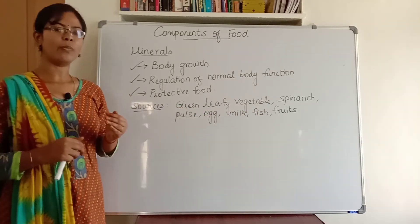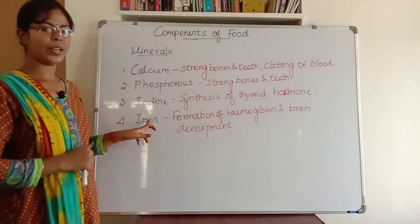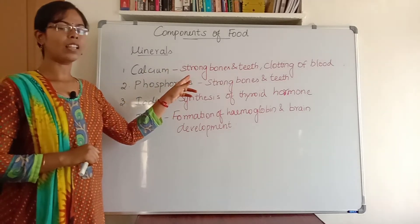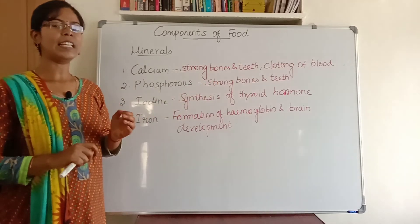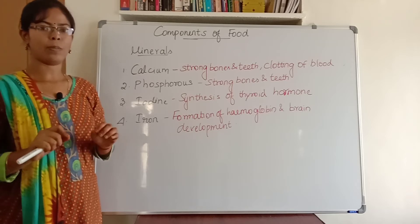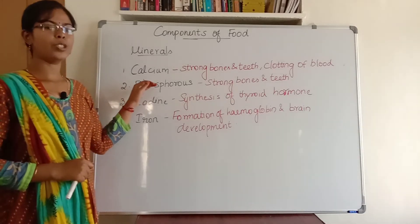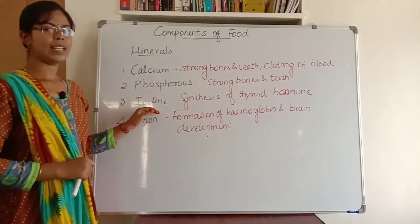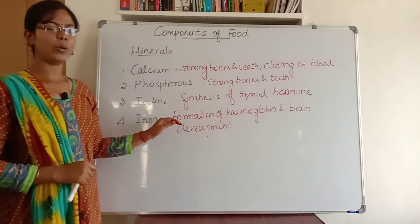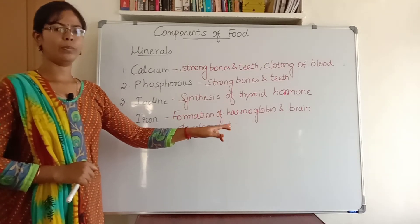Let us see about the various forms of minerals and their functions. The various forms of minerals are calcium, phosphorus, iodine, and iron. Calcium is necessary for strong bones and teeth and also for clotting of blood — so that even a small cut will stop bleeding at some point. Phosphorus is required for strong bones and teeth. Iodine is necessary for the synthesis of thyroid hormone. Iron is necessary for the formation of hemoglobin and brain development — for improvement in blood cell count and development of the brain.